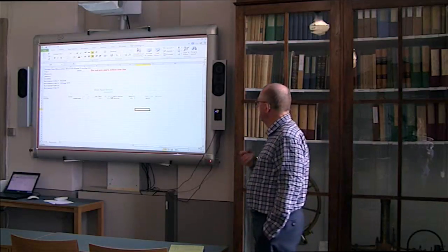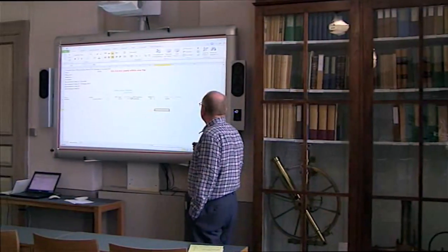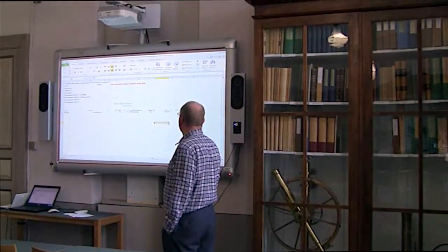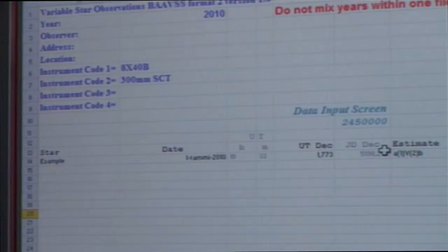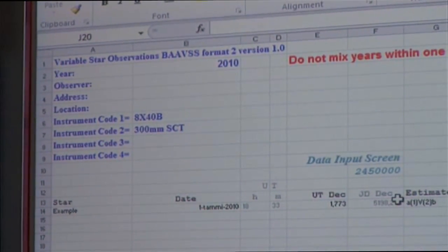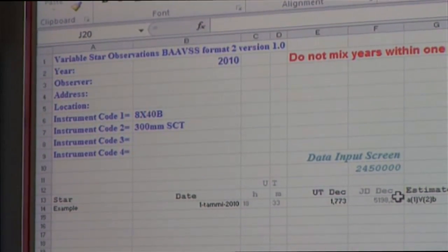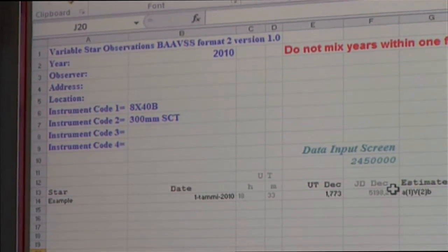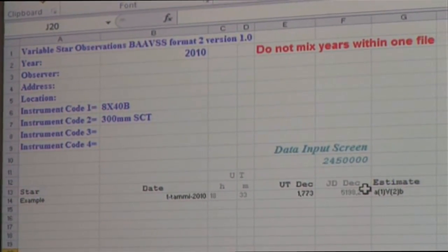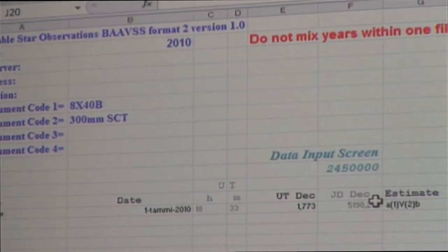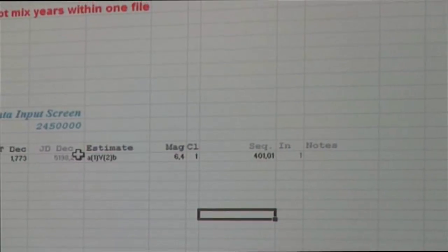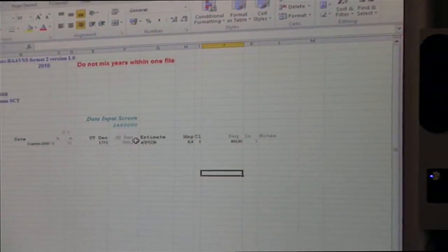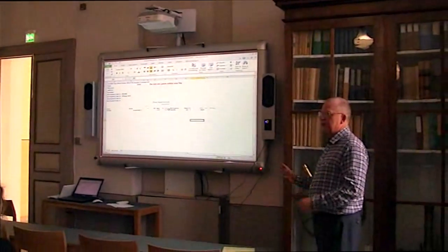Those estimate columns, those letters A and B, record the names given to the comparison stars in your chart. For CCD observations, we use a piece of software called AIPWIN. That piece of software will enable you to do photometry, and then once you've done that, that data will be automatically linked from that piece of software into our database.